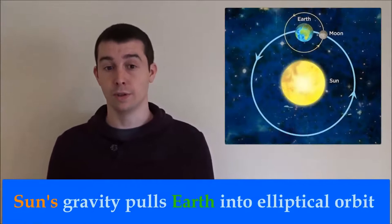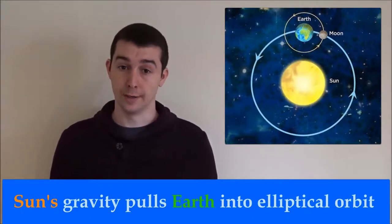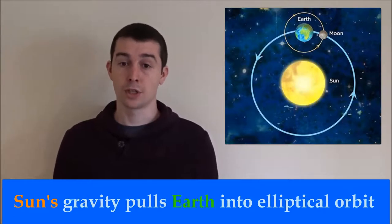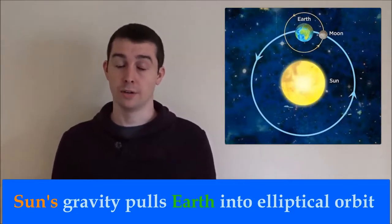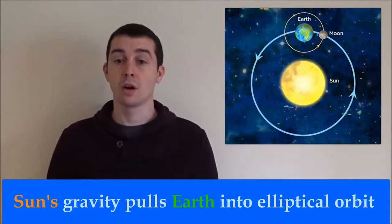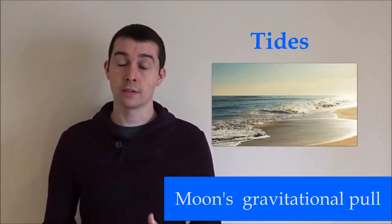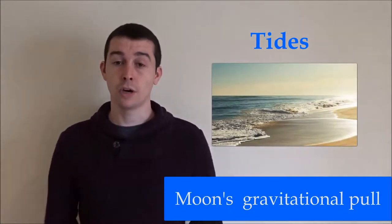This law explains how objects orbit. The earth is constantly moving and without the pull of the sun's gravity it will continue to move in a straight line. The pull of the sun's gravity continues to act upon the earth causing it to travel around the sun in an ellipse shape called an elliptical orbit. Using this law we can also explain the rise and fall of the tides due to the gravitational pull of the moon orbiting the earth.